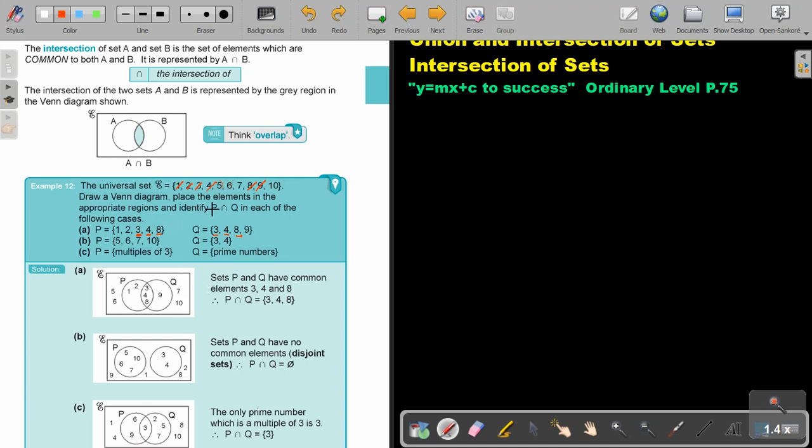And then the question, P intersection Q, so intersection, so it will be 3, 4 and 8 as you can see in the Venn diagram. Okay.